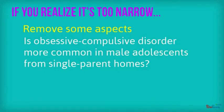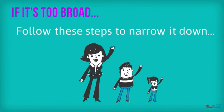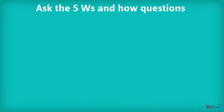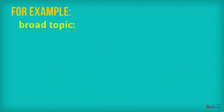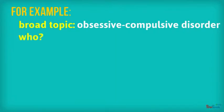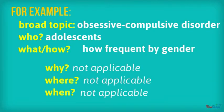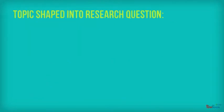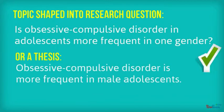If you realize your topic is too narrow, remove some aspects — that's just right. Is obsessive-compulsive disorder more common in male adolescents? If your topic is too broad, follow these steps to narrow it down. Ask the five W's and how questions. Take your broad topic and ask who, what, why, where, when, and how. For example, with obsessive-compulsive disorder: who do you want to talk about? Adolescents. What aspect or how? How frequent OCD is by gender? The other questions may not always be applicable — you may only need to ask a few. Now your topic is shaped into a research question: is obsessive-compulsive disorder in adolescents more frequent in one gender? Or a thesis you must argue: obsessive-compulsive disorder is more frequent in male adolescents.